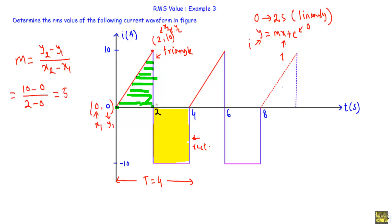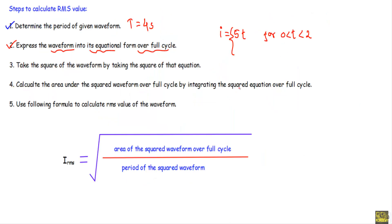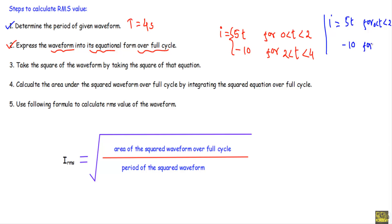Next, we look at the rectangle from 2 to 4 seconds. From 2 to 4 seconds, our current maintains a constant value of minus 10 amperes — it is like a DC quantity. Therefore for t from 2 to 4 seconds, the current equation is −10. So over the full cycle, i = 5t for t from 0 to 2, and i = −10 for t from 2 to 4.